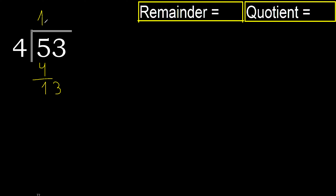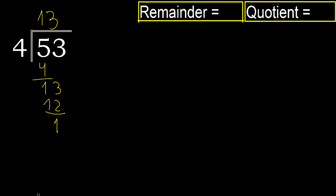4 multiplied by 4 is greater. Multiplied by 3 is 12 — it's not greater. 13 minus 12 is 1. Next. There is no next number, therefore finish.